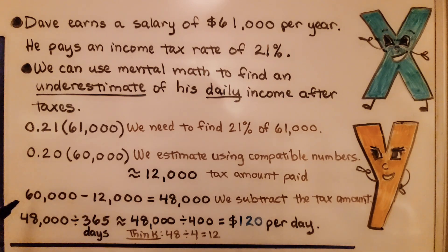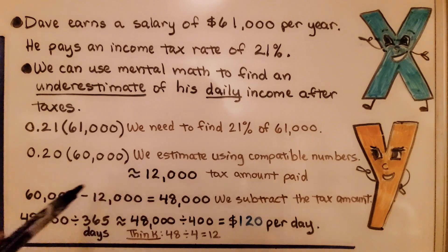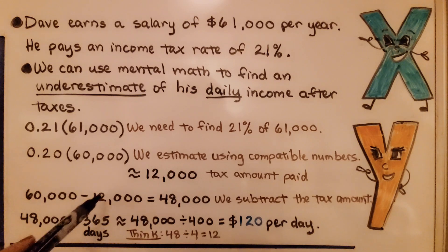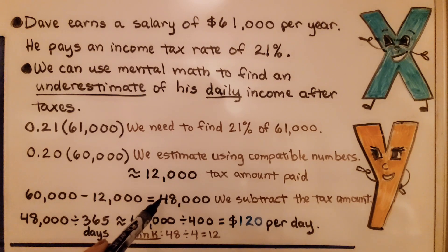Now, we need to subtract that tax amount. So, we take our $60,000, our estimate. We subtract $12,000 and that's equal to $48,000. Now, we're trying to find his daily income after taxes. So, we need to take this $48,000 and we need to divide it by 365 days in a year.